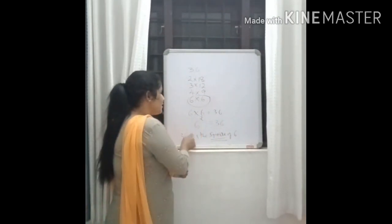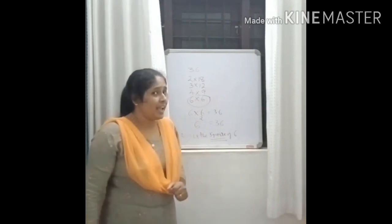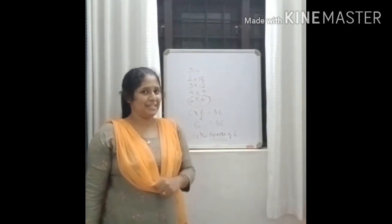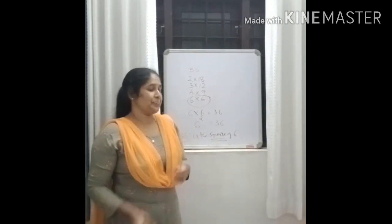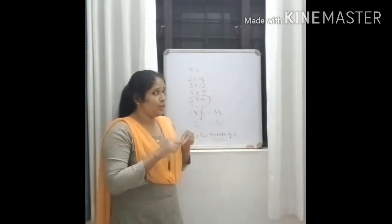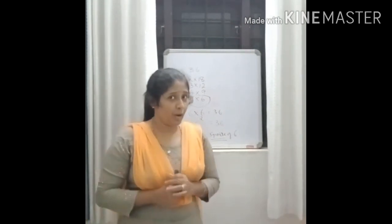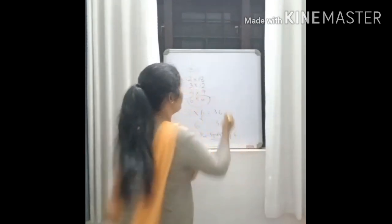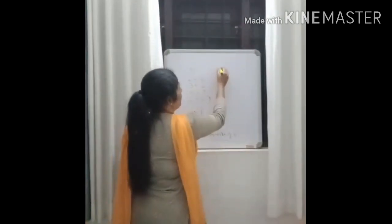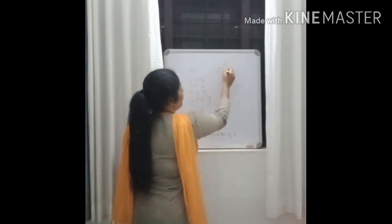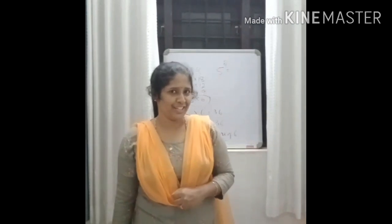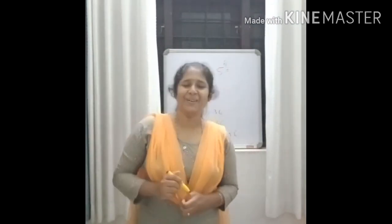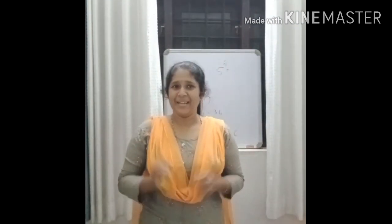Then thirty-six is also a square number. You have to find out what is the square of five — what is five squared? Thank you. Bye-bye.